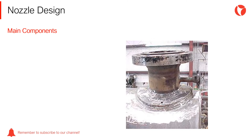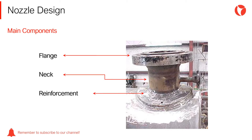The main components of a nozzle are the flange, the neck, and the reinforcement. There are different types of flanges, necks, and reinforcements. Each element will be designed depending on the requirements and service of the equipment.